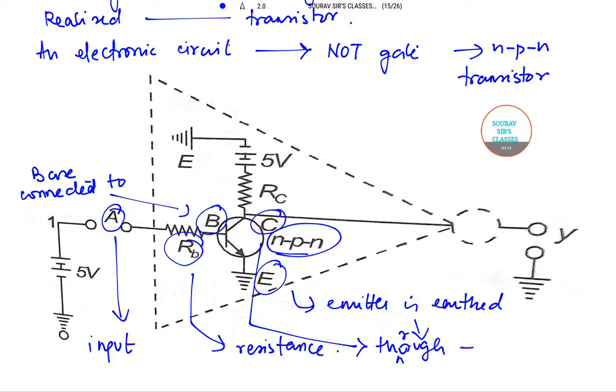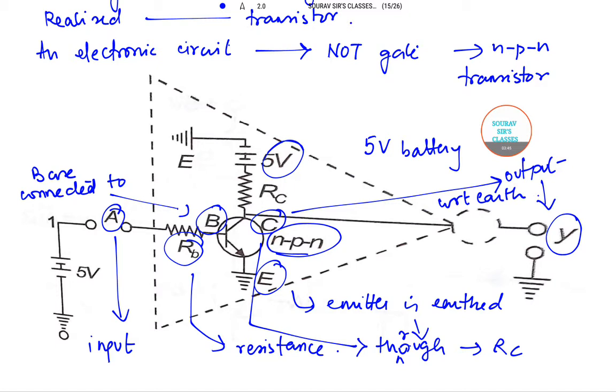A 5 volt battery is here. The output Y is the voltage at C, which is our collector, with respect to earth. The collector is earthed through a resistor RC and a 5 volt battery.